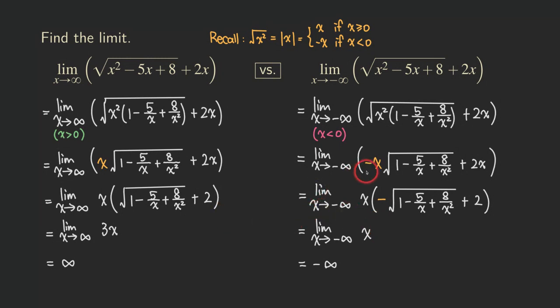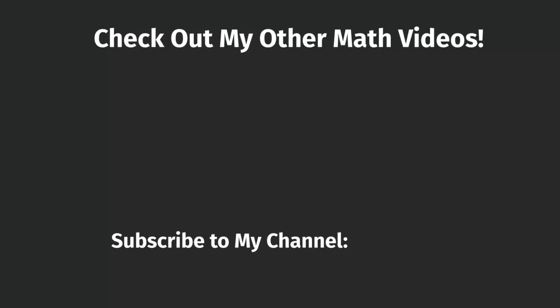It's important to remember that when you take the square root of x squared and simplify, and the resulting power is an odd power, you would have to put an absolute value around x so that you can split it into two cases. That's it for this problem. If you like this video, please give me a like, subscribe to my channel, and share my videos with others — it gives me support to make more videos. If you have questions or have a topic you want me to cover, please leave a comment. Thank you for watching.